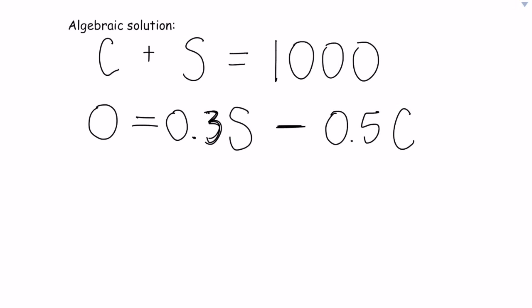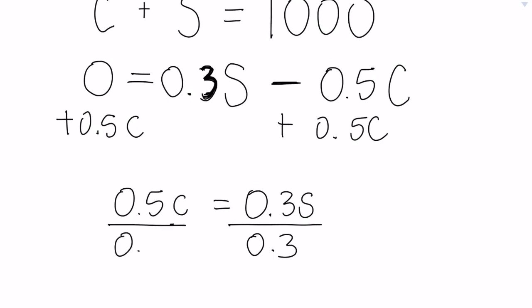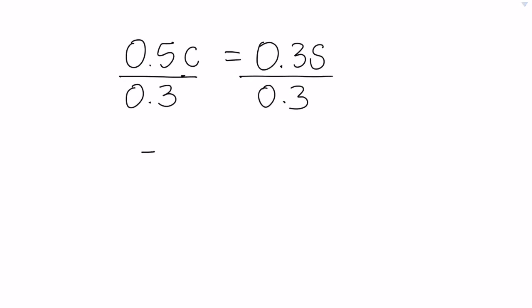And so we can do some algebra here, some rearranging of our equations to substitute one variable in for another. So I'm going to rearrange this second equation. I'm going to add 0.5C onto the other side. So we get 0.5C equals 0.3S. And I am going to solve for S, which means I'm going to divide by 0.3, and I will end up with 5 thirds C equals S.